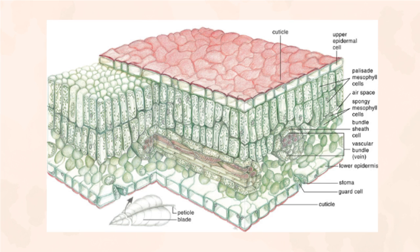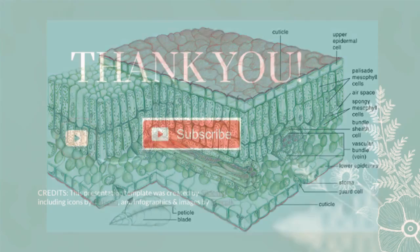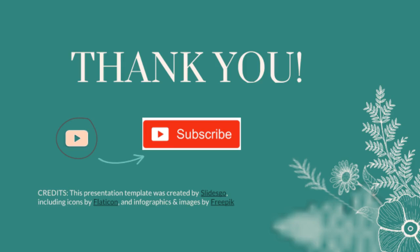Veins are also called the vascular bundle of the plant, which is further composed of xylem and phloem. Phloem will transport sugars and other carbohydrates throughout the plant, while water is transported via the xylem. Thank you for watching this video. There will be more videos coming every week following this series of plant anatomy. Please subscribe for more videos.